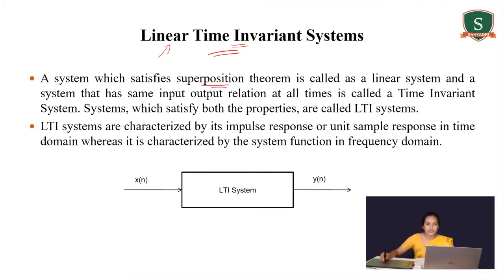A system which satisfies the superposition theorem is known as a linear system, and a system that has the same input-output relationship at all times is called a time invariant system. The system which satisfies both properties is called an LTI system.